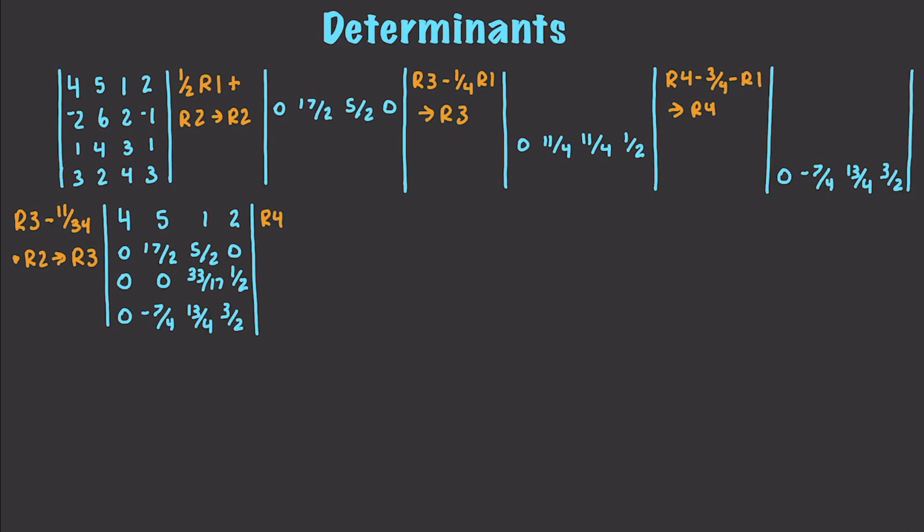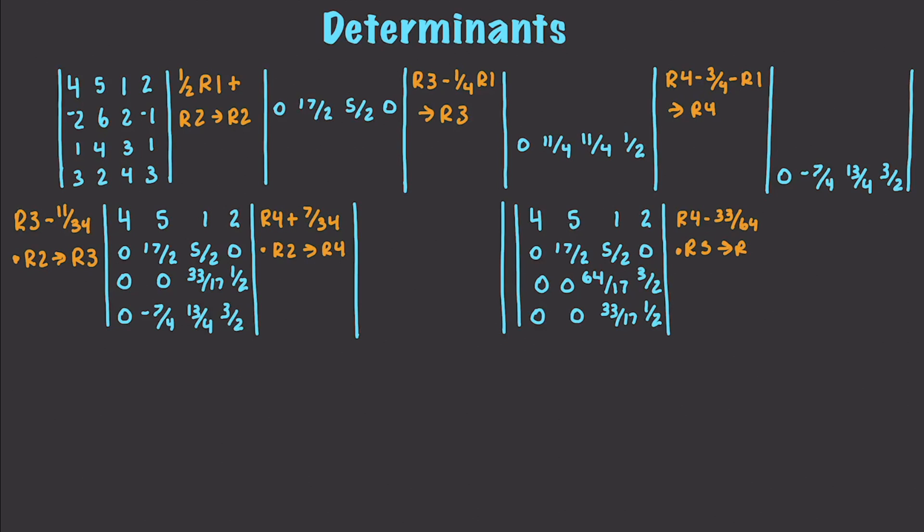Let's update R3 here. This is going to be 0, 0, 33 over 17, and 1 half. Then I want to update R4. I'm going to take R4 plus 7 over 34 times R2 and put that result in R4, which is going to be 0, 0, 64 over 17, and 3 over 2.